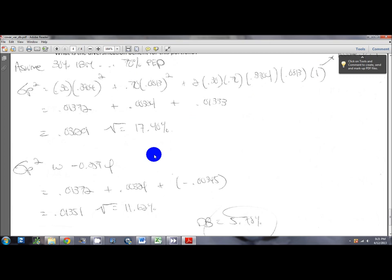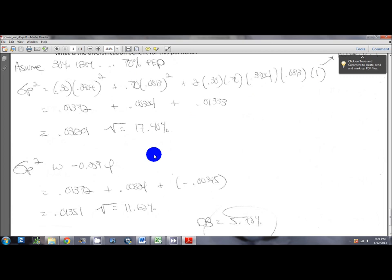Now that you have the standard deviation of the portfolio with the actual correlation coefficient, you subtract that number from what the standard deviation of the portfolio would have been had there been perfect positive correlation. That difference is your diversification benefit. That is how you do a fairly long problem with covariance, variance, expected returns, standard deviations, and diversification benefits. I hope this was helpful for you guys in solving a problem like this.